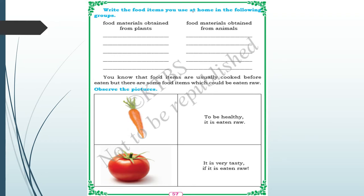Write the food items you see at home in the following groups: food materials obtained from plants, and food materials obtained from animals. Go through the first and second pages and write those answers.